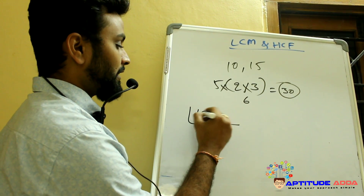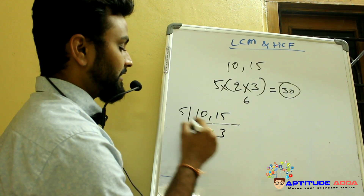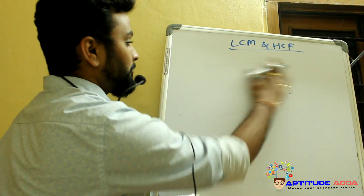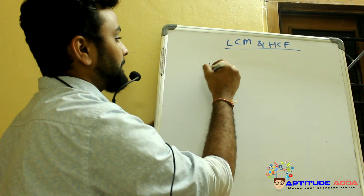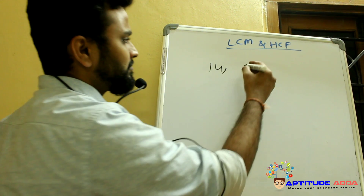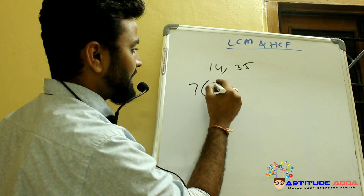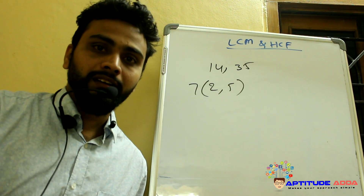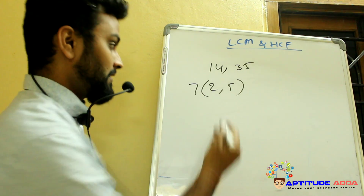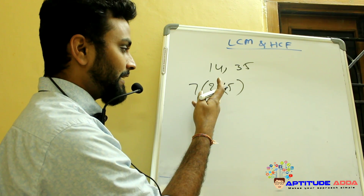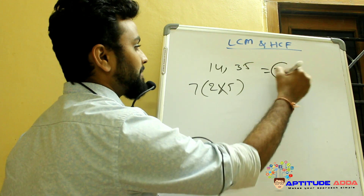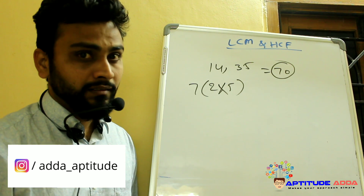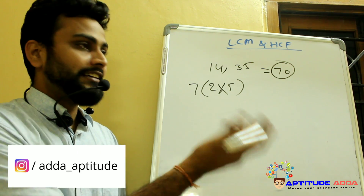You can check with the traditional method: 5 twos, 5 threes — 5 into 2 into 3 gives the same value. Consider one more example: 14 and 35. Here 7 is common for 14 and 35 — 7 twos, 7 fives. Here 2 and 5 are two prime numbers, so their product gives LCM: 5 into 2 is 10, 10 into 7 gives 70. So 70 is LCM of both 14 and 35.